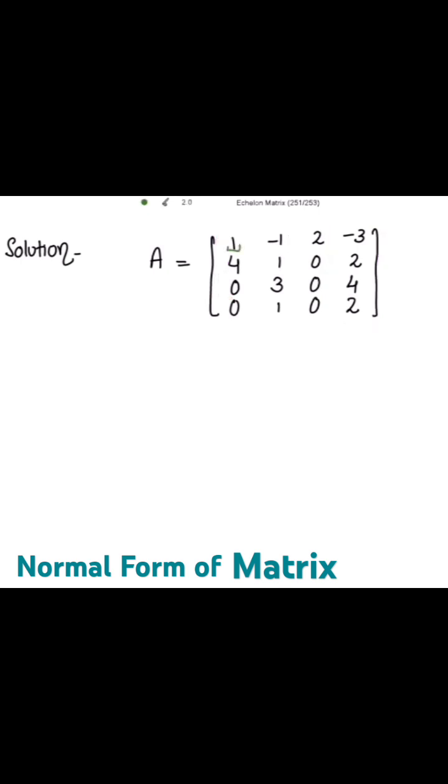I'm already having 1 over here. So to get the identity matrix, I need to make this 4 to be 0. That is, the entries below this entry 1 should be 0, right?